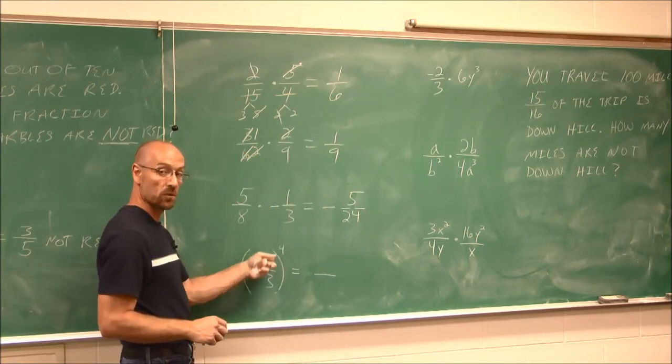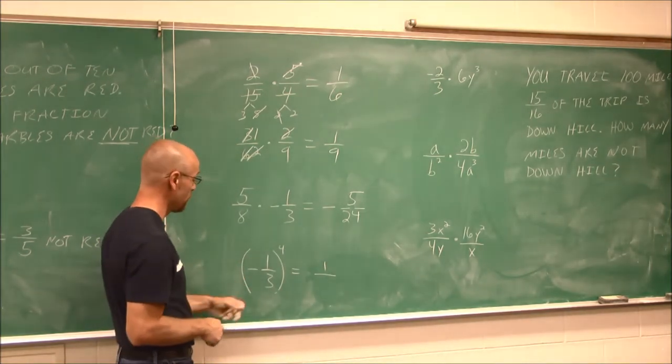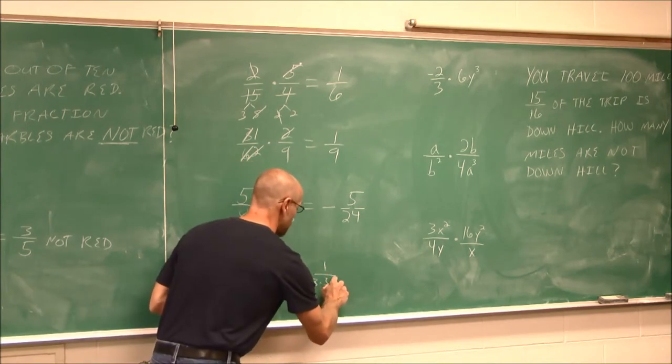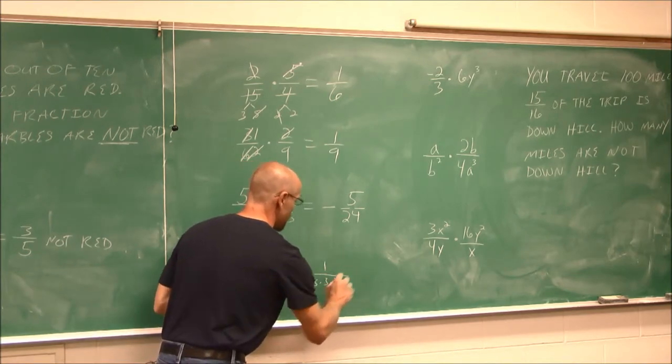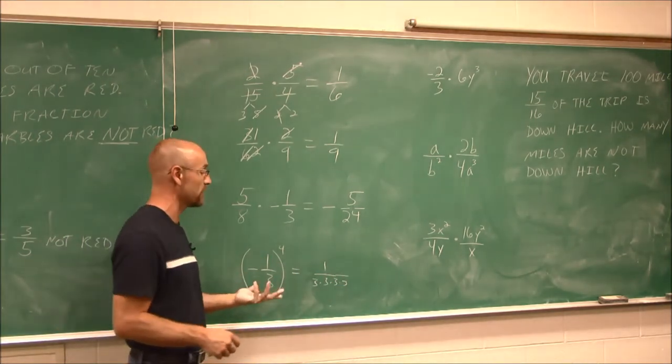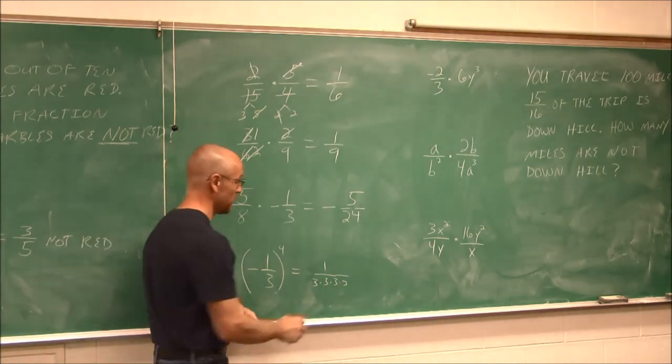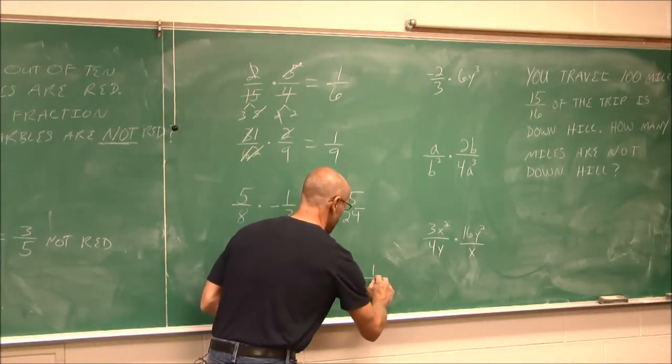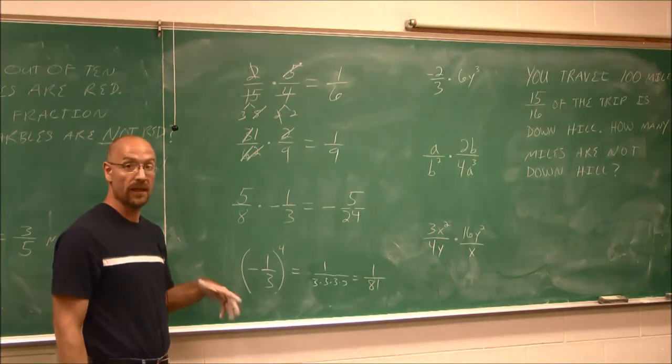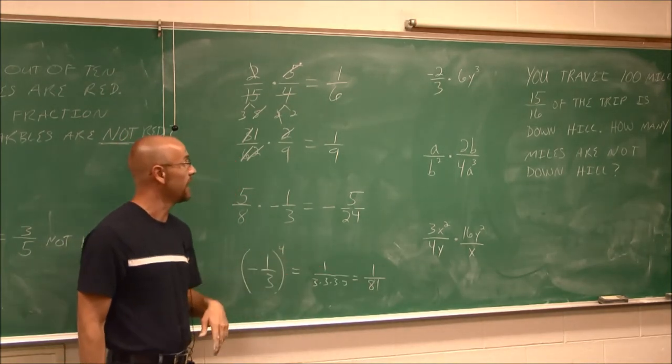This is going to be positive. So now I could say 1 times 1 times 1 times 1, or 1 to the 4th. 1 to any power is 1. 3 to the 4th, that's 3 times 3 times 3 times 3. 3 to the 4th is 81, which is also 9 times 9. We get 1 eighty-first. It's positive because we assessed a negative to an even power or an even amount of negatives will give me a positive value.